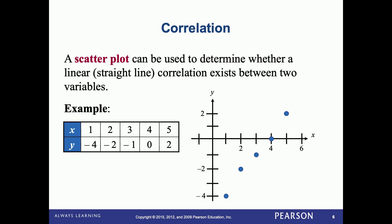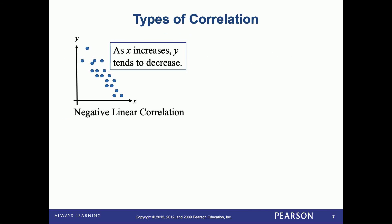Now, these points are in a straight line, and the slope of this line would be a positive number. So if you drew a line through this scatter plot and the slope of that line is negative, it's going downhill, you would say it has a negative linear correlation.